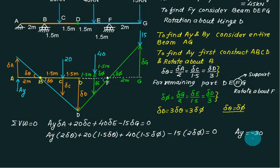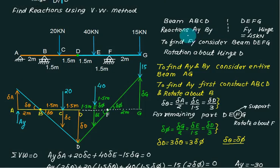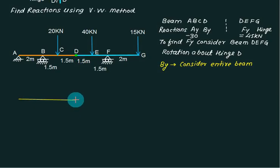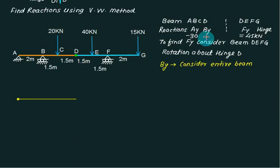The answer is minus 30. Now to find BY, consider the entire beam constructed in two parts. The first part ABCD has the forces shown. Rotation is permitted about A, and you have to find BY — so show BY and rotate.